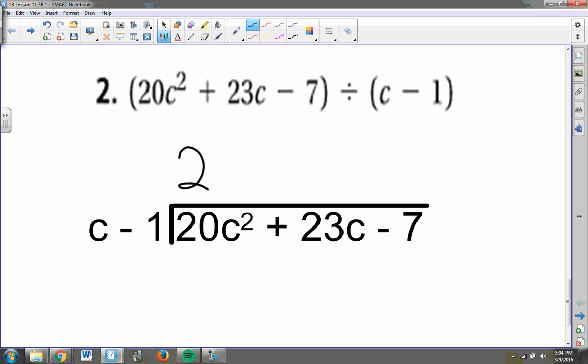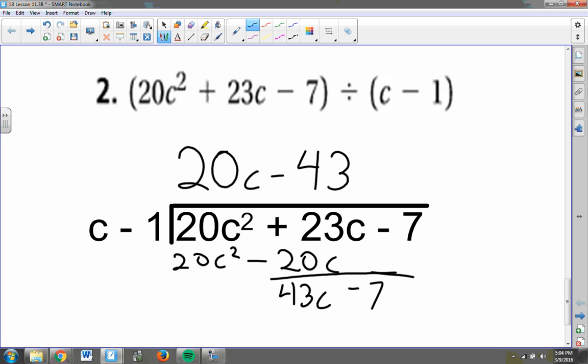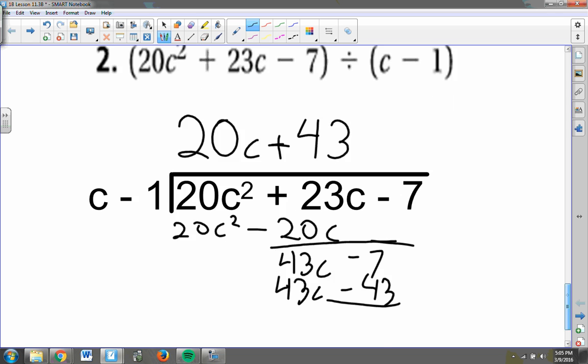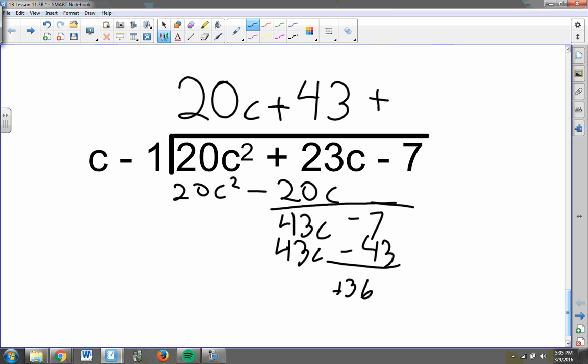Okay. We should get 20c there, and this is 20c squared minus 20c. So this becomes 43c, and then bring down the minus 7. So this becomes 43, so this is 43c minus 43, and I subtract negative 7 minus negative 43. That becomes a positive 36, so I'll add 36 over c minus 1. 20c plus 43 plus 36 over c minus 1.